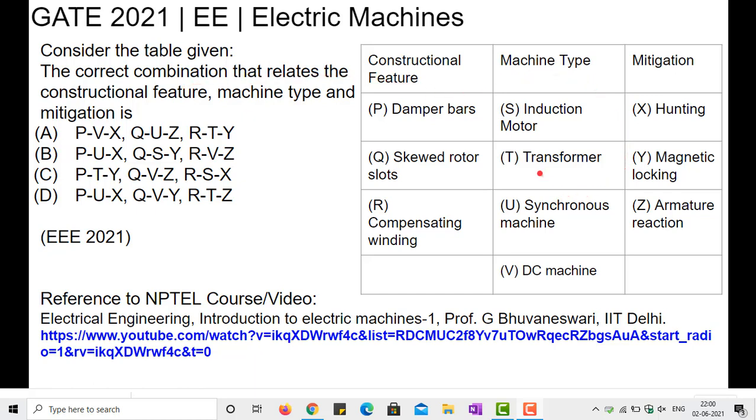Here this is the table. The correct combination that relates the constructional feature, machine type and the mitigation ease. These are the given options.